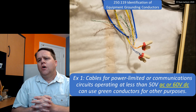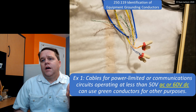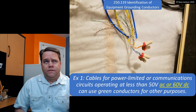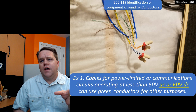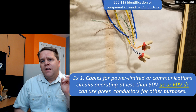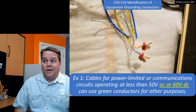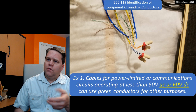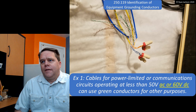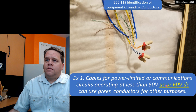Power over Ethernet can operate up to 57 or 58 volts DC. This rule used to say 50 volts, which meant you couldn't use an Ethernet cable for Power over Ethernet applications. So it was revised to 60 volts DC to catch up with that technology.